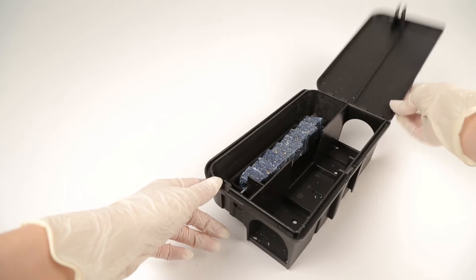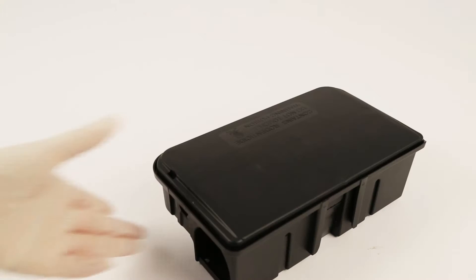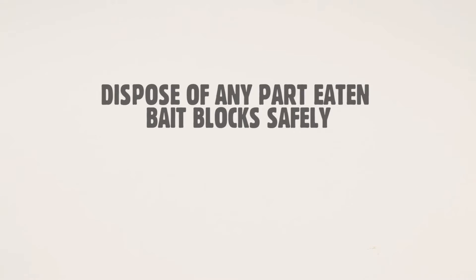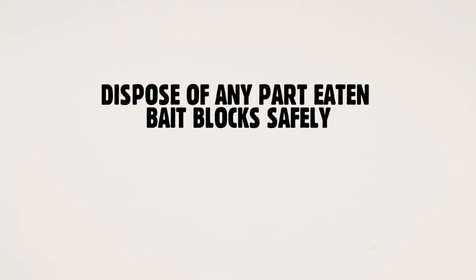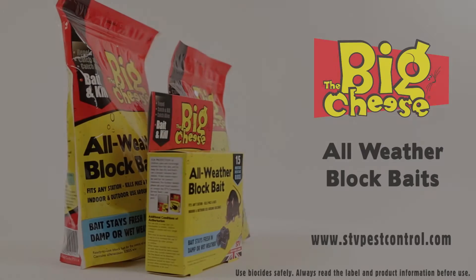Make frequent inspections and replenish the bait as required. Remove the bait station completely and dispose of any part-eaten bait blocks safely once rodents have stopped eating the all weather bait blocks.